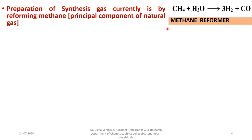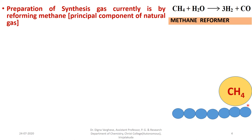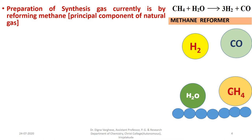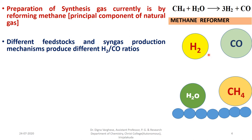Methane reforming is done using a methane reformer — a device used for steam reforming, or steam methane reforming. Steam methane reforming is a method for producing syn-gas by the reaction of a hydrocarbon with water on a metal catalyst surface, where methane is adsorbed and water is also adsorbed, forming carbon monoxide and hydrogen. Methane reacts with water forming synthesis gas or syn-gas. Different feedstocks and syn-gas production mechanisms produce different hydrogen-to-carbon monoxide ratios.